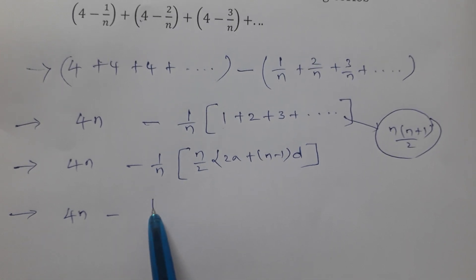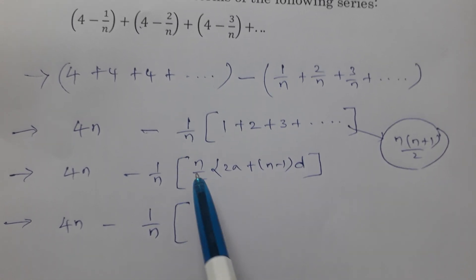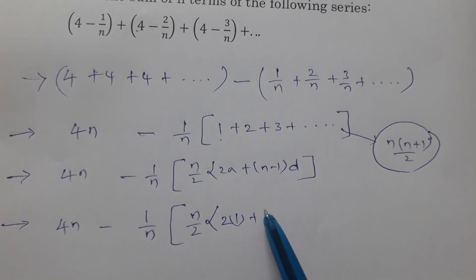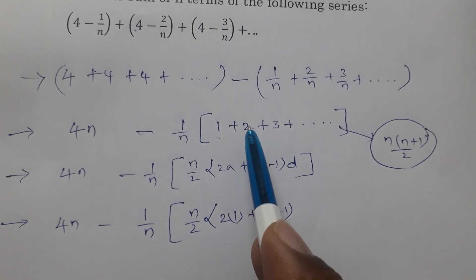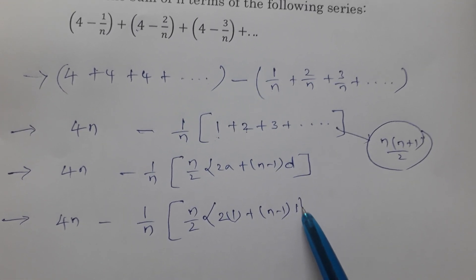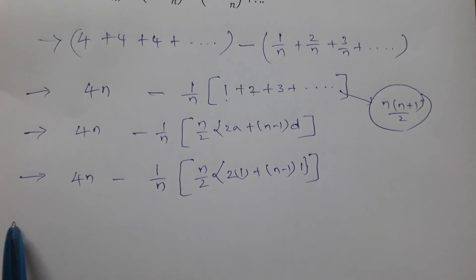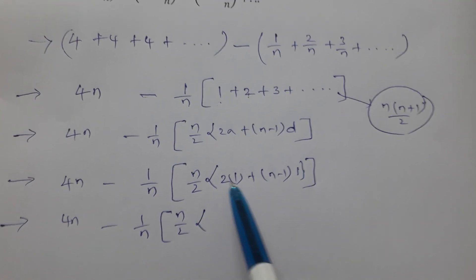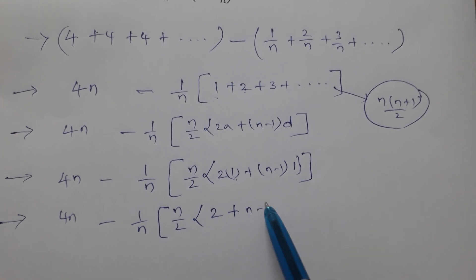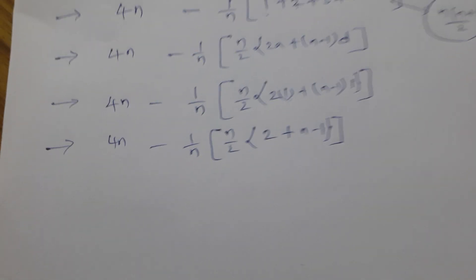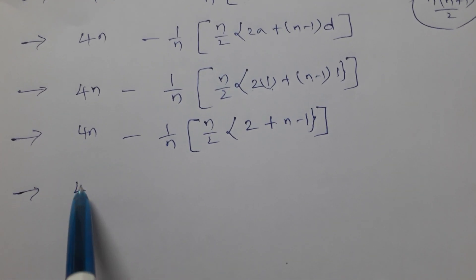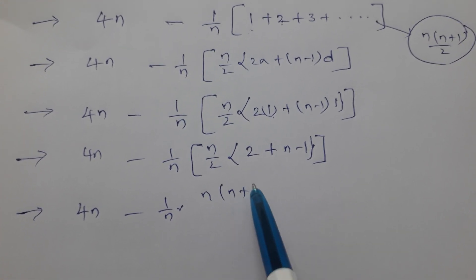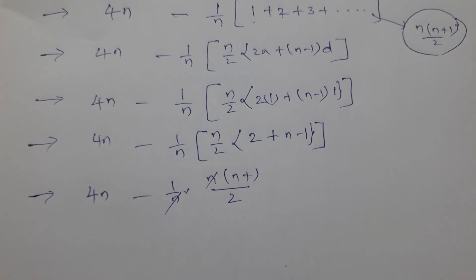So: 4n minus (1/n) into n(n+1)/2. Here the common difference d = a2 - a1 = 2 - 1 = 1. Now (1/n) times n(n+1)/2 — the n's cancel — leaving (n+1)/2.